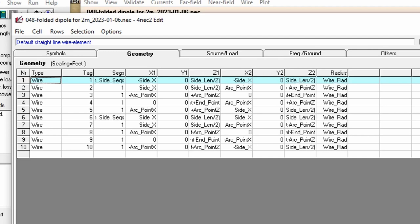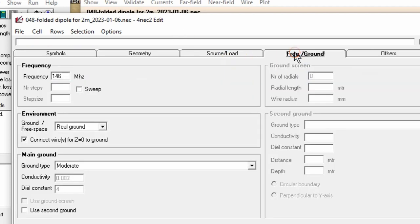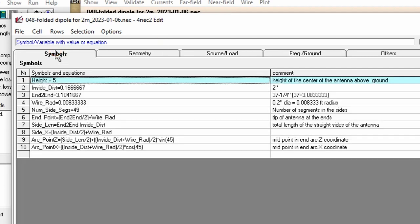One last thing before we get into what makes this model tick. Click on the frequency slash ground tab. The frequency should be set to 146 MHz, environment to the real ground and main ground set to whatever is appropriate for your area. In my case, moderate is a reasonable choice.